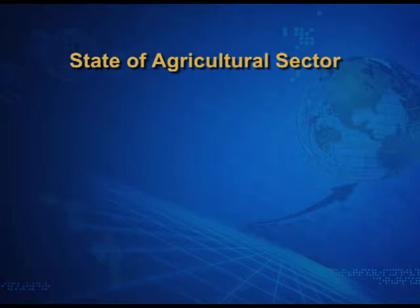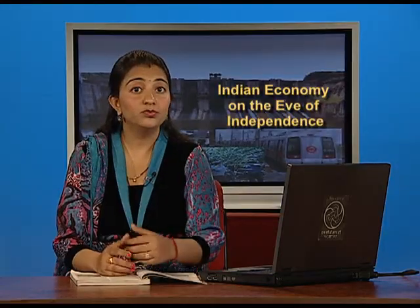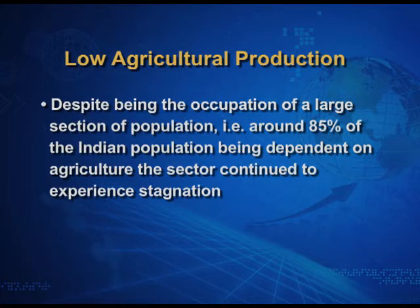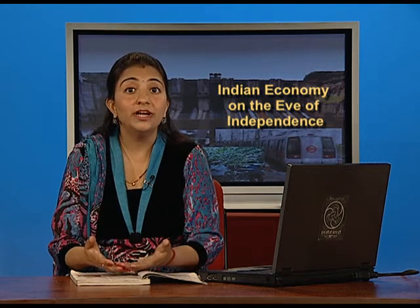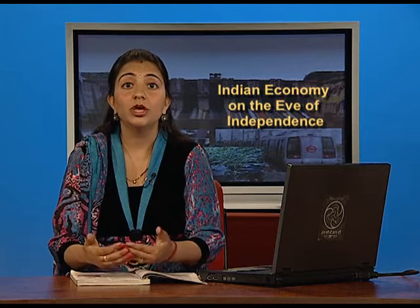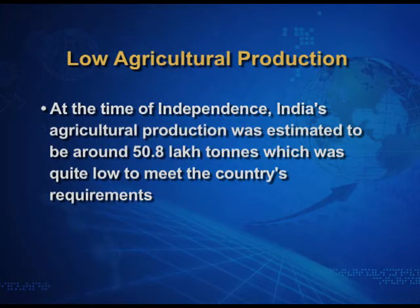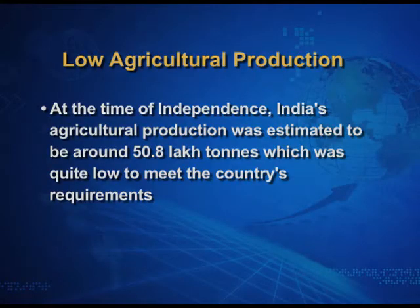Indian agriculture showed a great sign of backwardness and stagnation on the eve of independence. The first point being low agricultural production — despite being the occupation of around 85% of the Indian population, this sector continued to experience stagnation. Agricultural production was quite low to meet the needs of the population. At the time of independence, India's agricultural production was estimated to be around 50.8 lakh tons, which was quite low to meet the country's requirements.